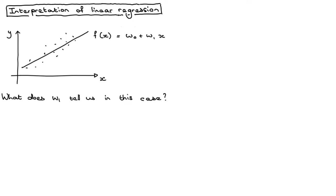So what does W1 tell us in this case? It will be a positive number. And the idea is that if we increase X by one unit, then our prediction will go up by W1. So we can think of W1 in this case, it's a positive number. So basically increasing X will increase the prediction from our model.